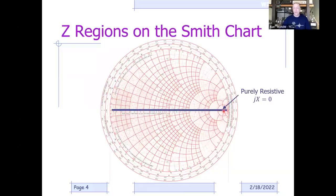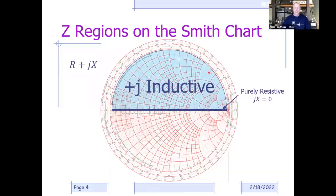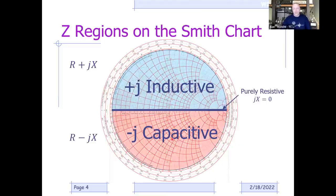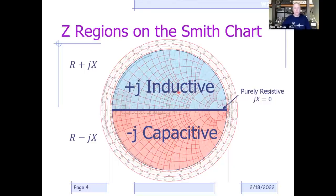Anything above that prime axis—the upper hemisphere—represents inductive reactance. If the reactive portion of the complex impedance is inductive, it will show somewhere on the top half of the Smith chart. Conversely, capacitive reactance is down below. The sign of the j-term determines whether you're inductive or capacitive: anything with a minus-j will be in the lower hemisphere, and anything with a plus-j will be in the upper hemisphere.